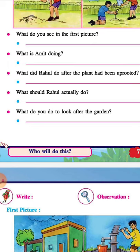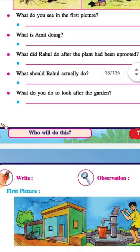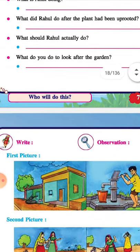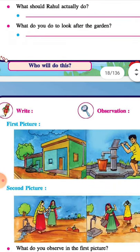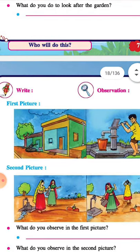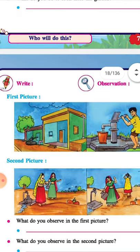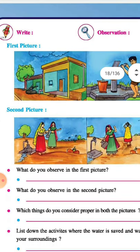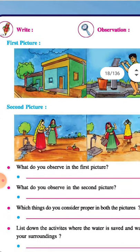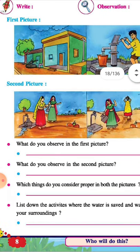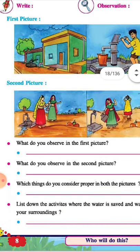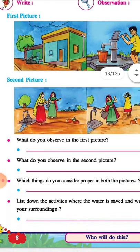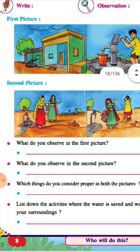What do you do to look after the garden? If you are taking care of the garden, what do you do? Do you make a boundary or a fence in your garden? What do you keep?